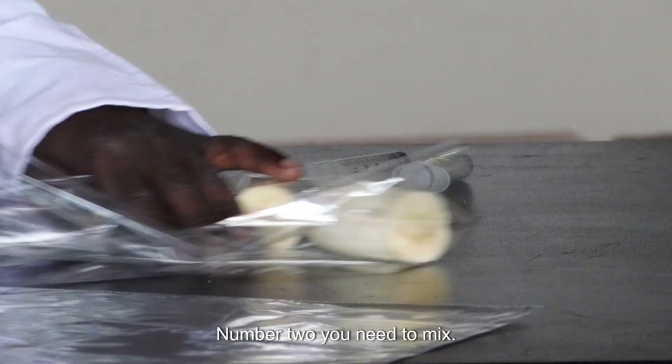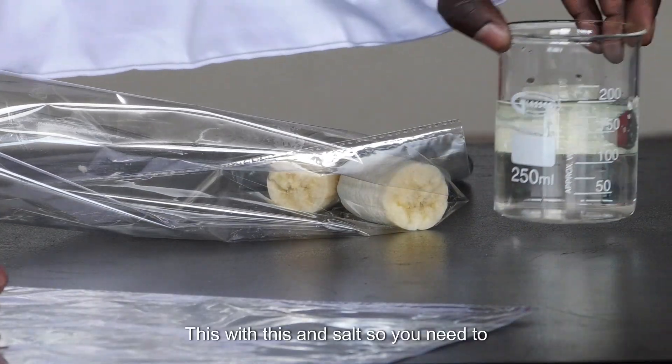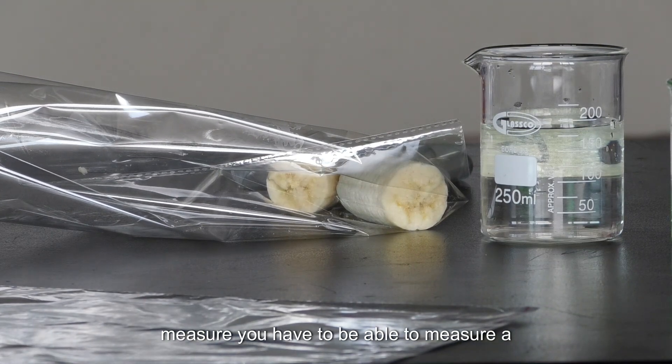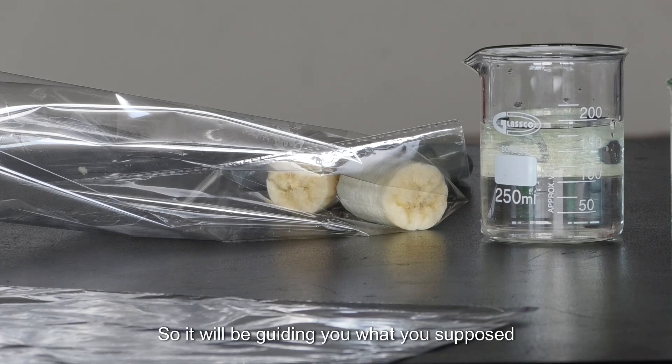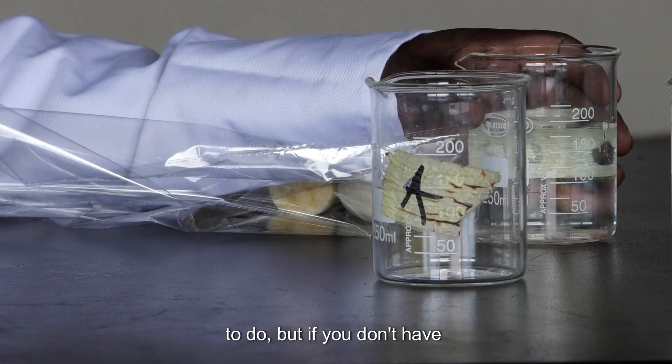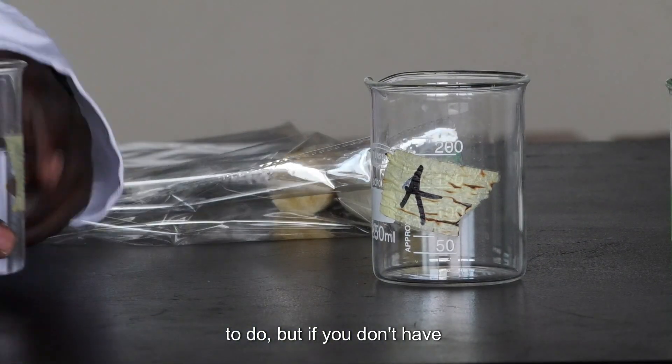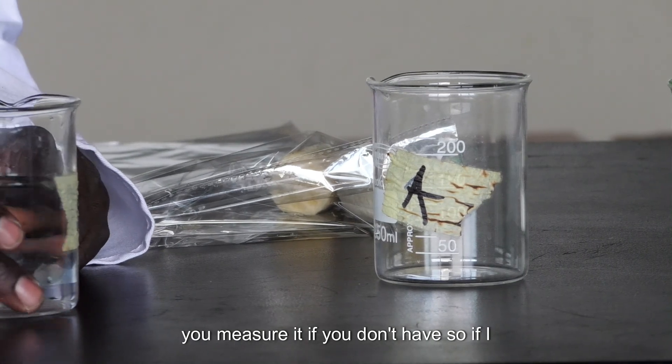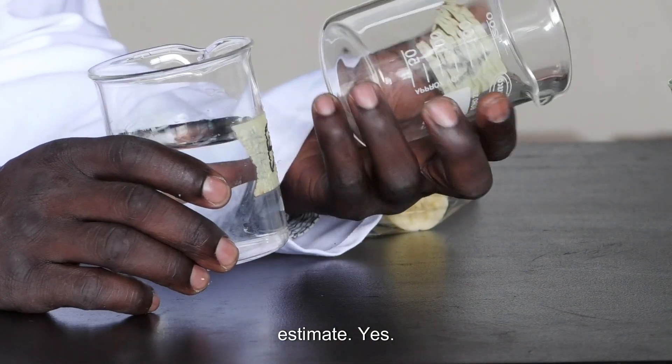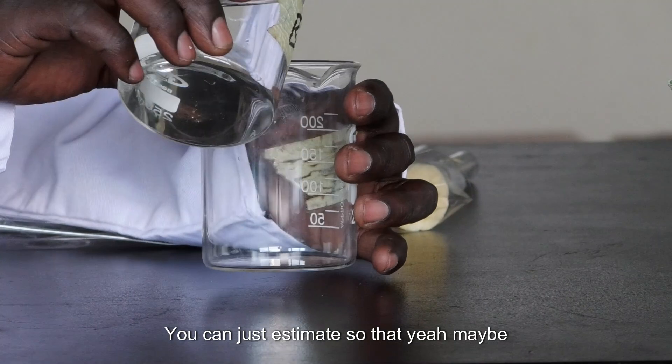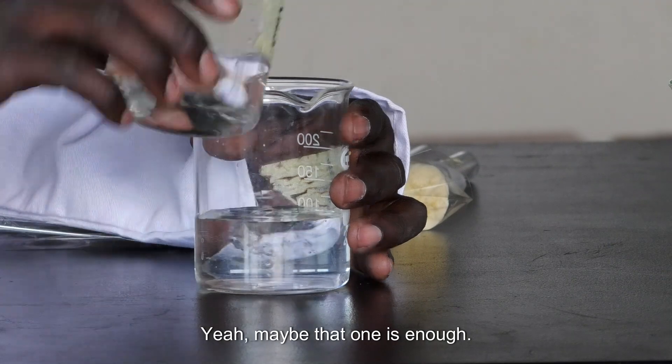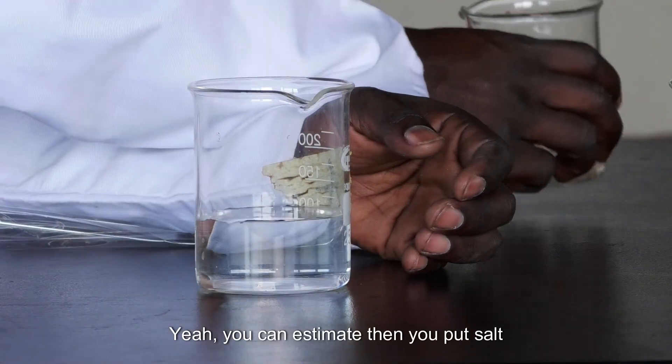Number two, you need to mix this with this and salt. So you need to measure. You have to be able to measure a specific concentration. It will be guiding you what you're supposed to do depending on the experiment you want to do. But if you don't have, how you measure it? So if I don't have, what do I do? You can just estimate. You can just estimate. Maybe depends on how much you need. Maybe that one is enough. You can estimate.